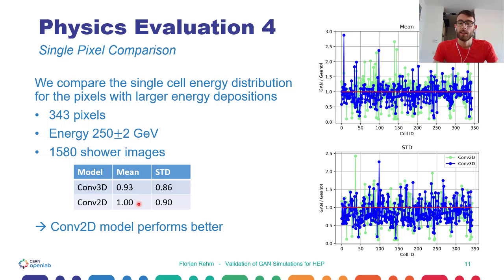In the standard deviation, we can see that both GAN models underestimate the standard deviation, the convolutional 3D model even a bit more than the convolutional 2D model. And therefore, the convolutional 2D model performs better in this metric.